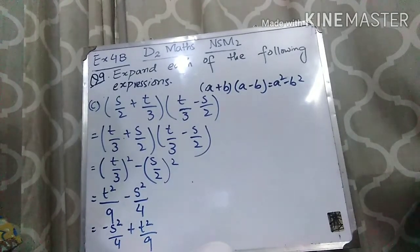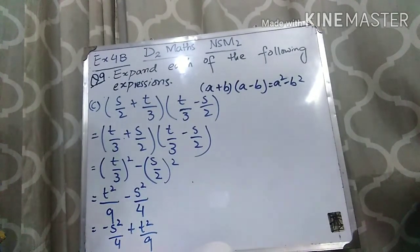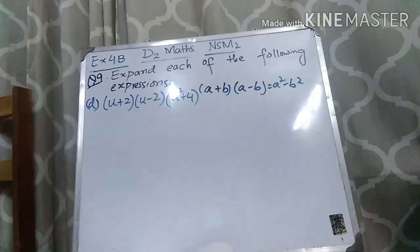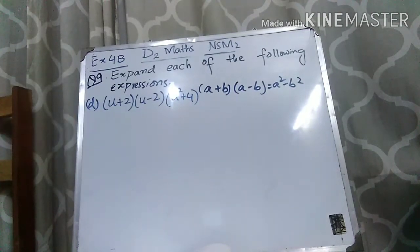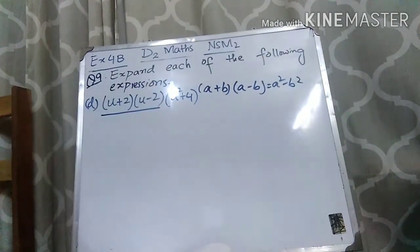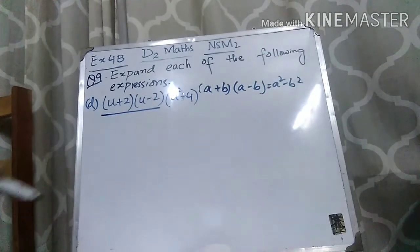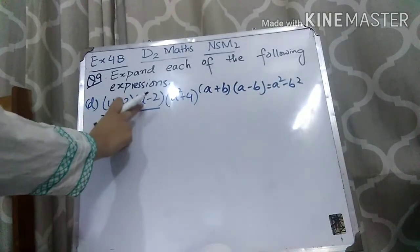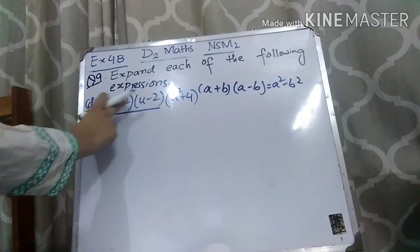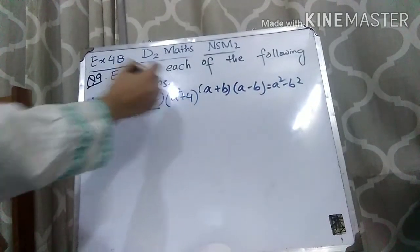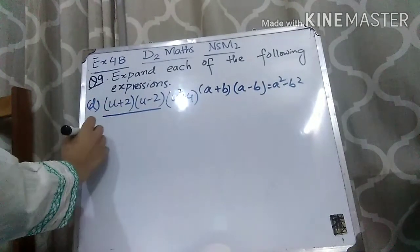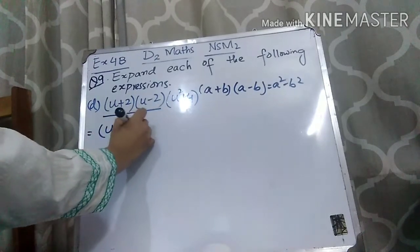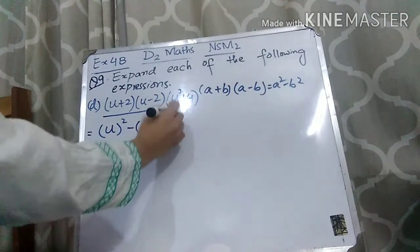I hope Part C is clear. Now let's move to the last part of this question. Part D is (U + 2)(U − 2)(U² + 4). Here we have three brackets. First, take the first two brackets. We can use the formula A plus B times A minus B, where A is U and B is 2. Write the third bracket (U² + 4) as it is. Now apply the formula.